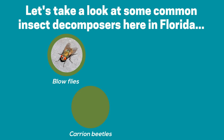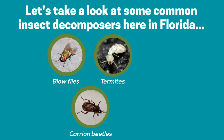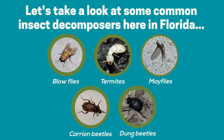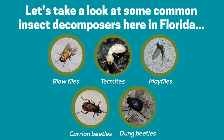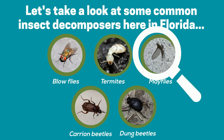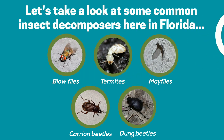Let's take a look at some common insect decomposers here in Florida. Blowflies and carrion beetles consume dead meat. Termites consume dead wood. Dung beetles consume animal feces. And mayflies consume decaying plant material. Now we can dive into each different function of insect decomposers a little more.